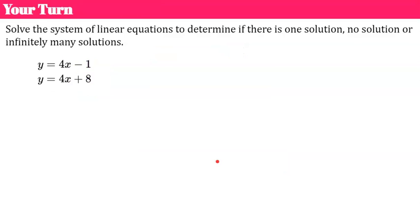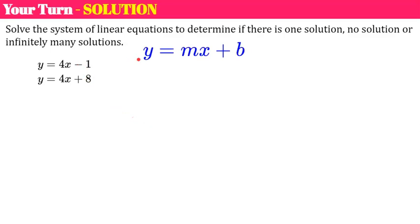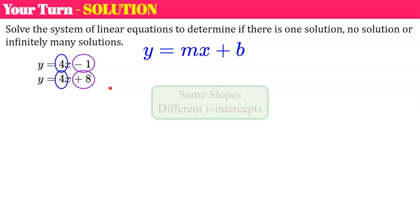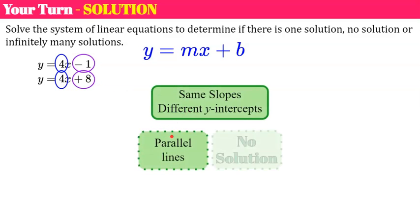Your turn. Please pause, determine the solution, and come back. Welcome back. Both equations are in slope-intercept form. They have the same slope, so we need to look at the y-intercepts. The y-intercepts are different, meaning the lines would be parallel if graphed, and we would have no solution.